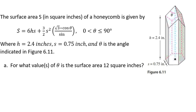In this video, we're going to be doing an application problem of finding the surface area of a honeycomb. The surface area S in square inches of a honeycomb is given by S equals 6HS plus 3 halves s squared times the square root of 3 minus cosine theta divided by the sine of theta.